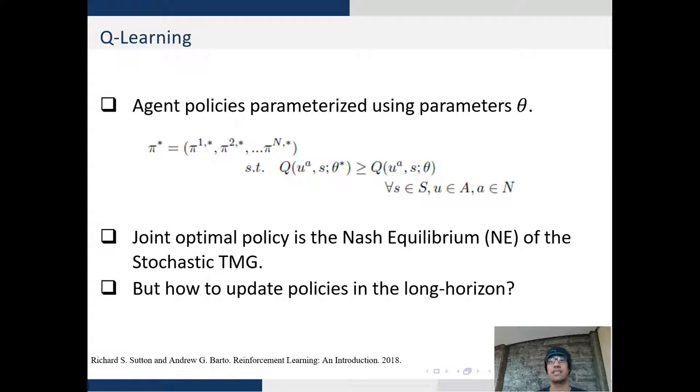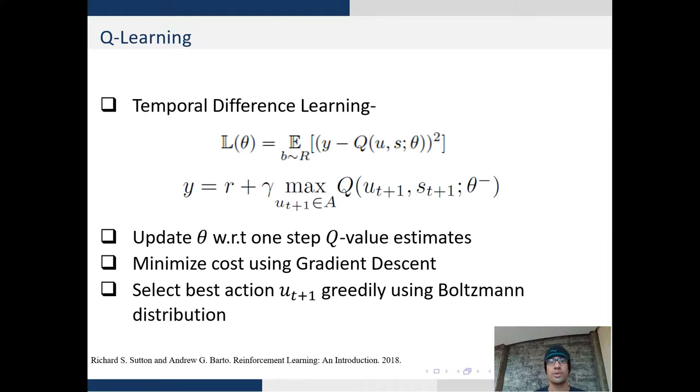This can also be interpreted as the Nash equilibrium of the team Markov game where each agent performs optimally and has no incentive to deviate. But how do we update these policies or these distributions in the long-horizon?